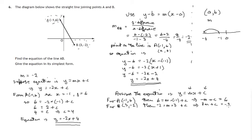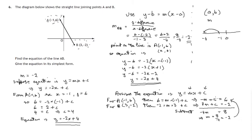You'll recognise simultaneous equations here. Subtracting the second equation from the first: negative m minus 3m gives negative 4m; c minus c disappears; and 6 minus negative 2 is 6 plus 2, which is 8. Dividing both sides by negative 4, m equals 8 divided by negative 4, which is negative 2. Substituting negative 2 back into the first equation: negative of negative 2 plus c equals 6, so 2 plus c equals 6. Taking 2 from both sides gives c equals 4.